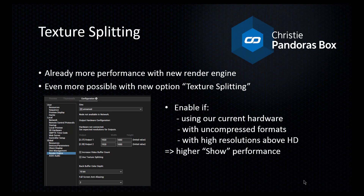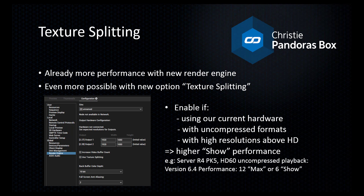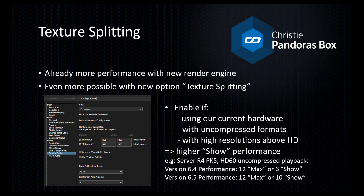We are currently working on new performance sheets and hoping to upload them soon. As one example: with current server hardware and performance kit 5, playing back uncompressed content at 60fps, you were previously able to play back 12 layers simultaneously before overloading the system, but only 6 under show circumstances — half the layers. With the new version, the maximum limit cannot be pushed further, but the show performance now allows loading 10 content containers, which is much closer to the maximum performance.